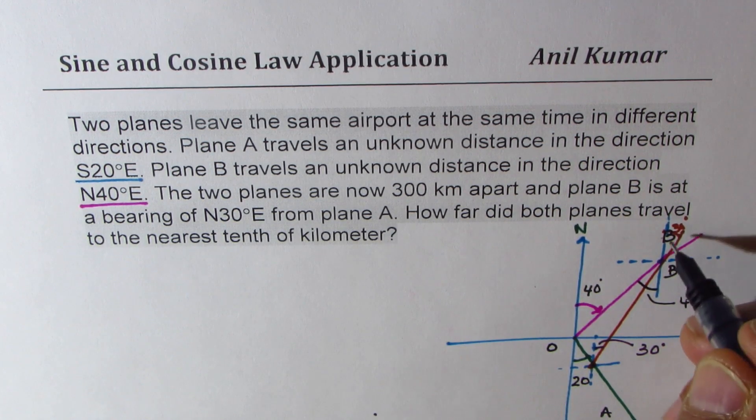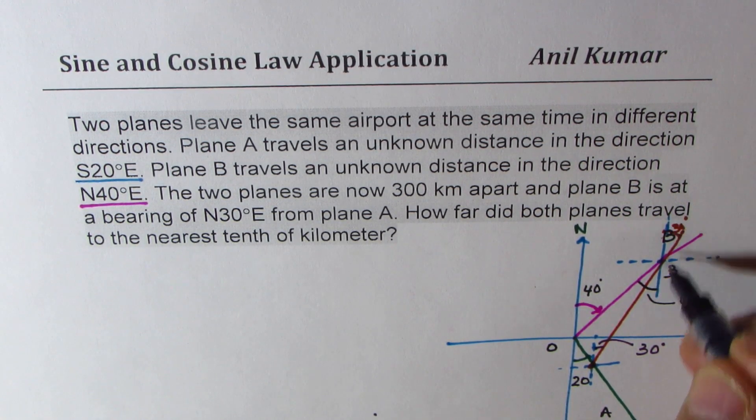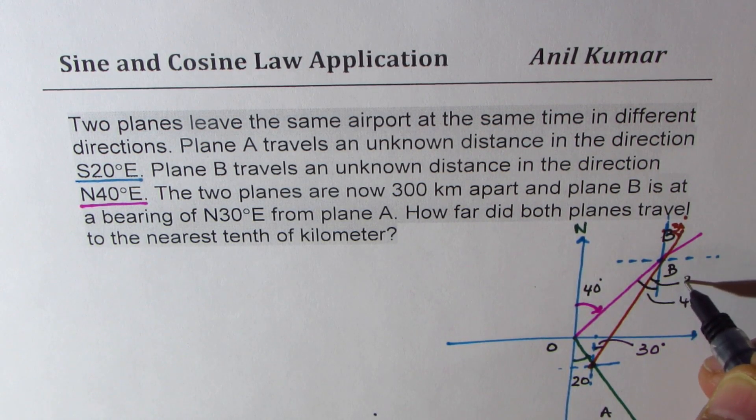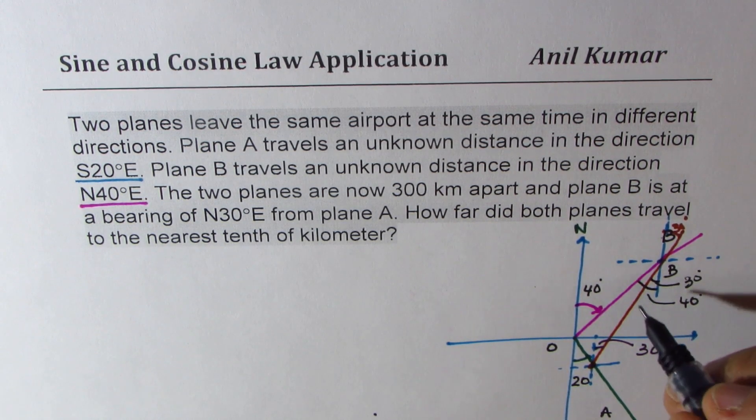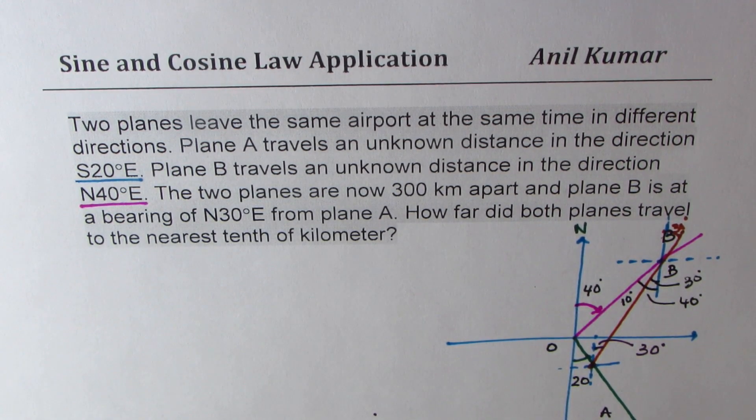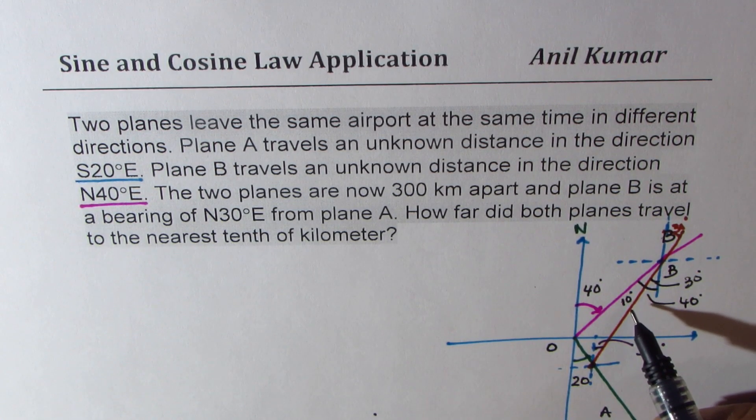And now that line basically is the angle right there. So this angle here is 30 degrees. So the angle inside the triangle is only 10 degrees. So we got one angle which is 10 degrees.